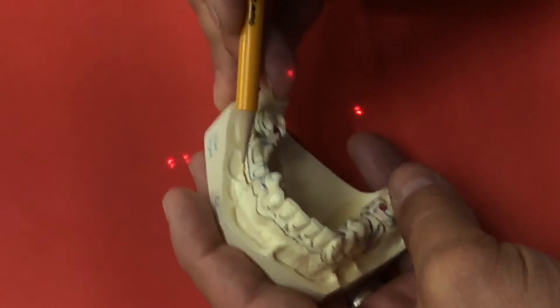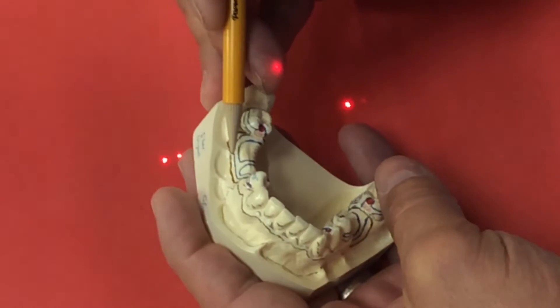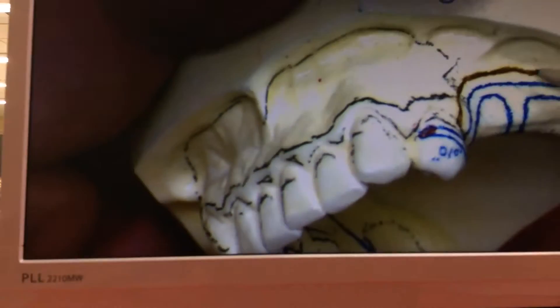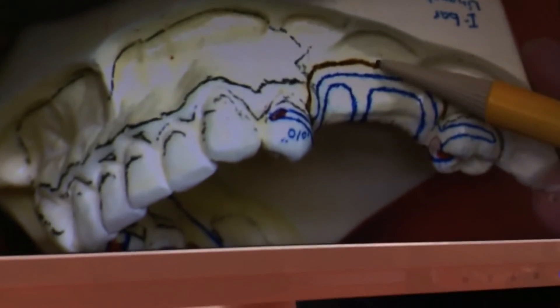In a Class 3, it doesn't have to extend as close to the vestibule and have as much tissue coverage, because all we're trying to do is keep the food from getting underneath the partial. We're not sharing the support with the tissues. We've got plenty of teeth to take care of that.